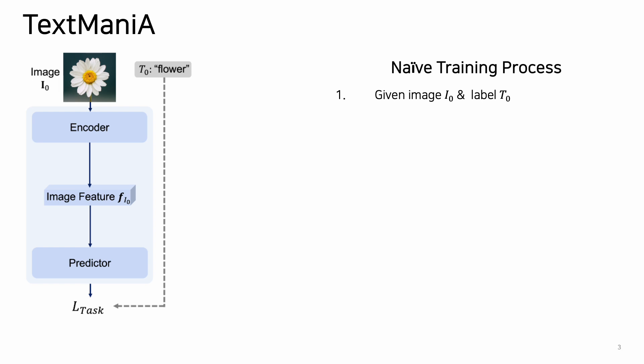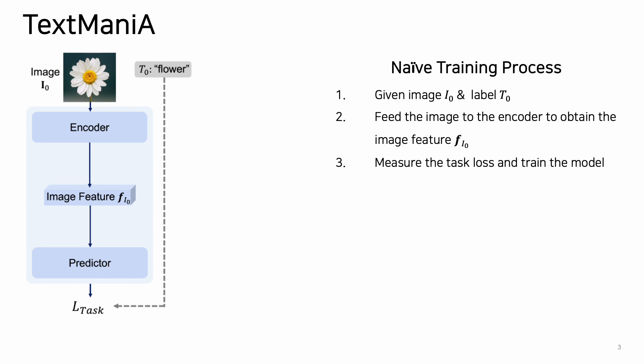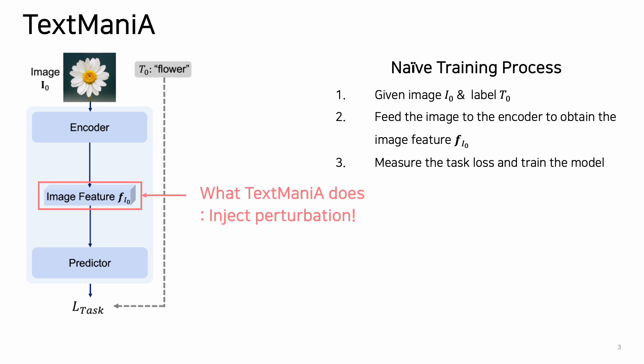Before applying Text Mania, we first describe the naive training process. When the image and the corresponding label are given, we feed the image to the encoder to obtain the image feature, and measure the task loss with the given label to train the model. For Text Mania, we will augment the image feature by injecting perturbation from the text attribute.